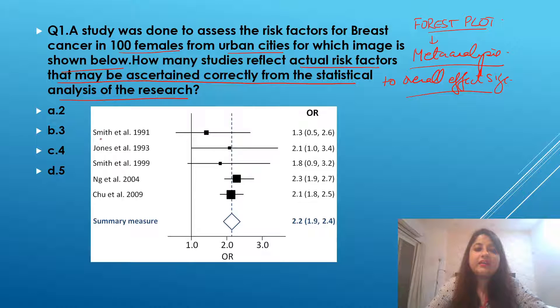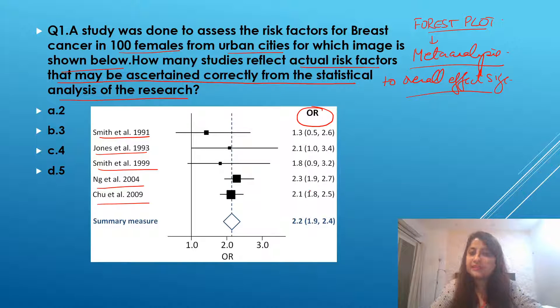If you look at this figure, there are a number of studies here. Smith et al. 1991, Johns et al. 1993, Smith et al. again 1999, NG et al. 2004, and Chu et al. 2009. And over here, you can see a number of the odds ratio for these various studies that are given.